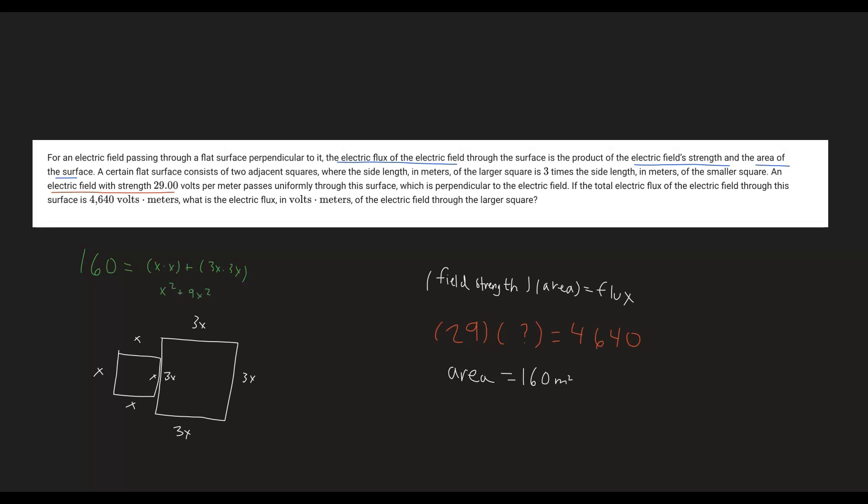Those are like terms, so x squared plus 9x squared gives us 10x squared. Now we have 10x squared equals 160, so we can divide both sides by 10 to get x squared equals 16.